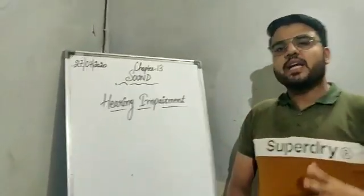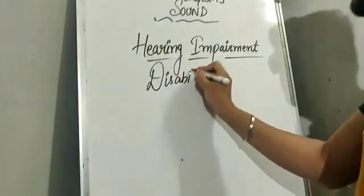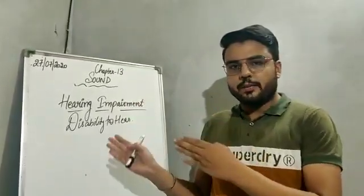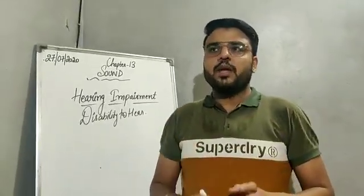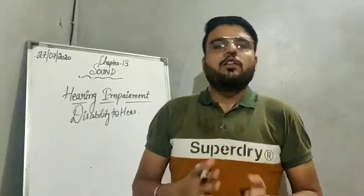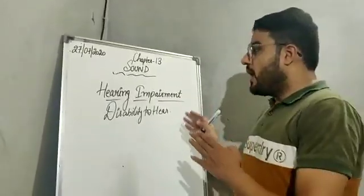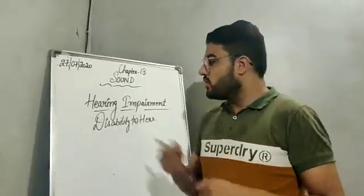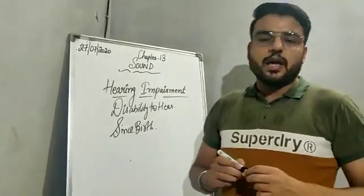Now we will discuss a very serious and major issue — that is hearing impairment. Hearing impairment means disability; the person suffering from hearing impairment is not able to hear or listen to anything. This can be due to various reasons. First of all, some people or some children are disabled and unable to hear since birth — this condition can be present since birth.